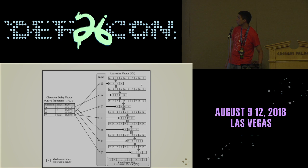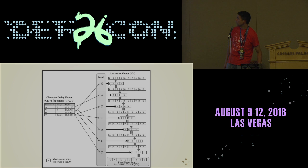Then you start with what we call an activation vector. We go through each letter in the text, look at the corresponding character delay vector, add that chunk to the vector, keep moving forward, and shift one over.